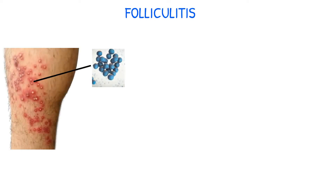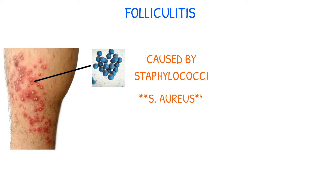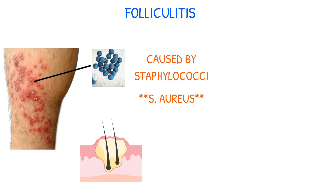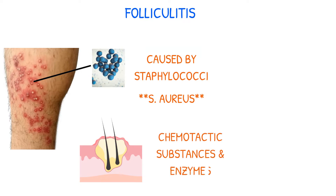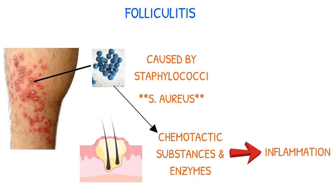Folliculitis is a staphylococci infection of the hair follicle, with S. aureus being the most frequent offender. When the bacteria multiplies around the hair follicle entrance and spreads into the follicle, an infection results. Chemotactic substances and enzymes released by the bacteria are what cause the subsequent inflammation.